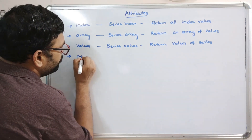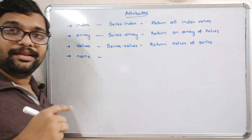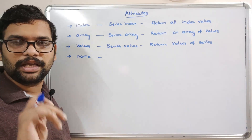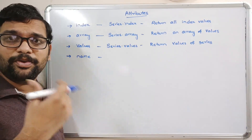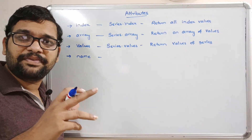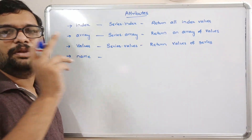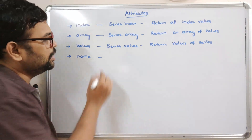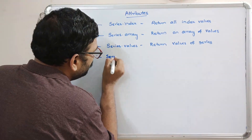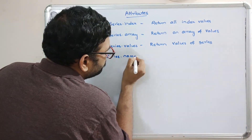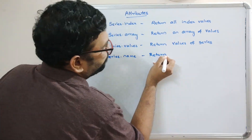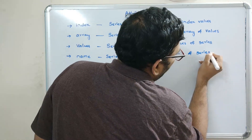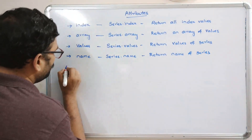The next attribute is name. By creating the series we can also give a name for the series. This is optional — we may or may not give a name. If you specify a name for the series, that name will be returned; if you are not specifying any name, nothing will be printed. The syntax is series.name and it returns the name of the series.